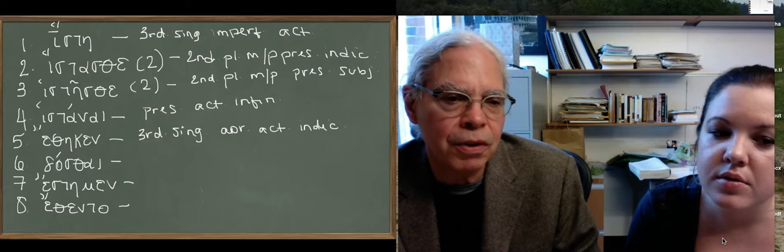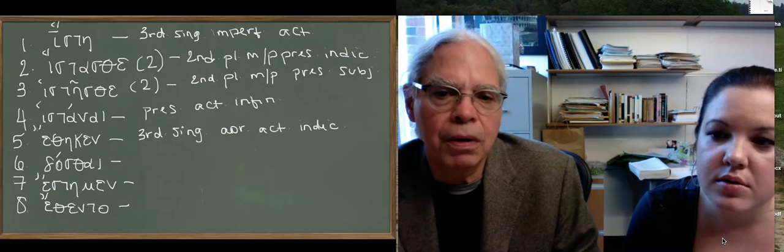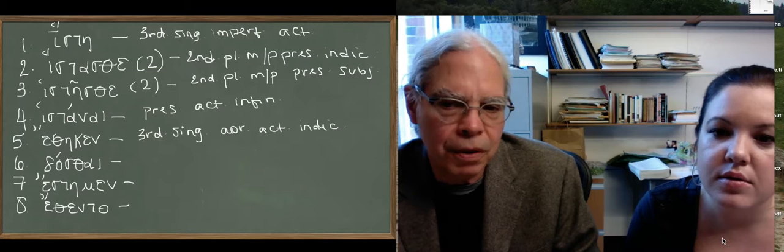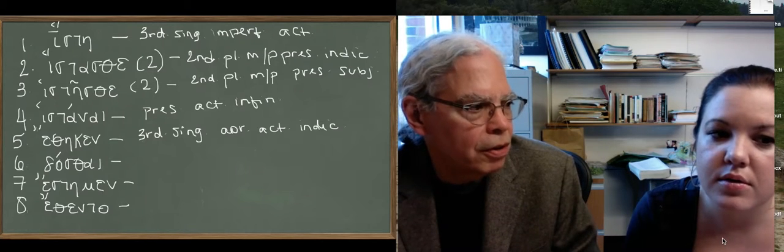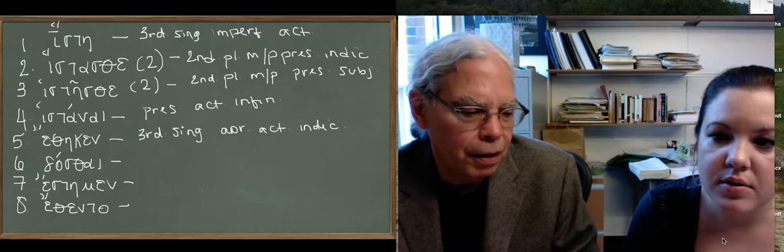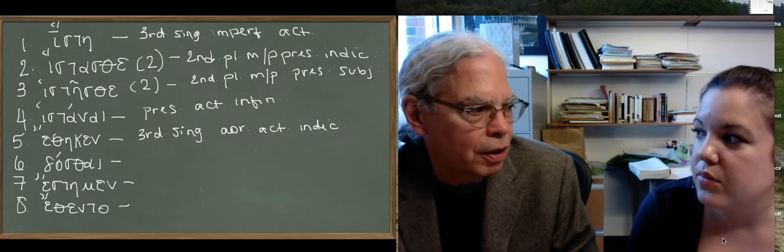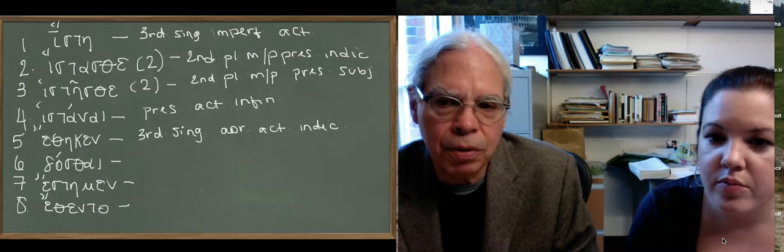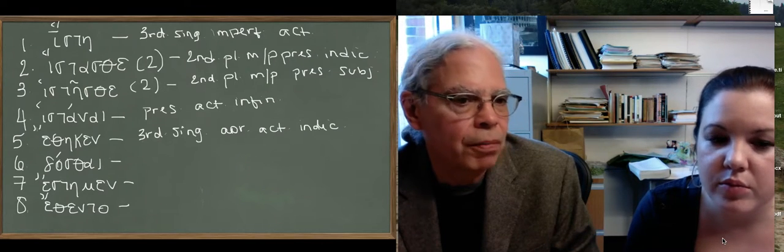The verb to stand, histymid, does not have that kappa. But tithymid and didomid do in the singular of the aorist. So you just have to expect it and not let it make you think that the verb is perfect because of it. The crucial thing being the reduplication to identify the aspect stem.